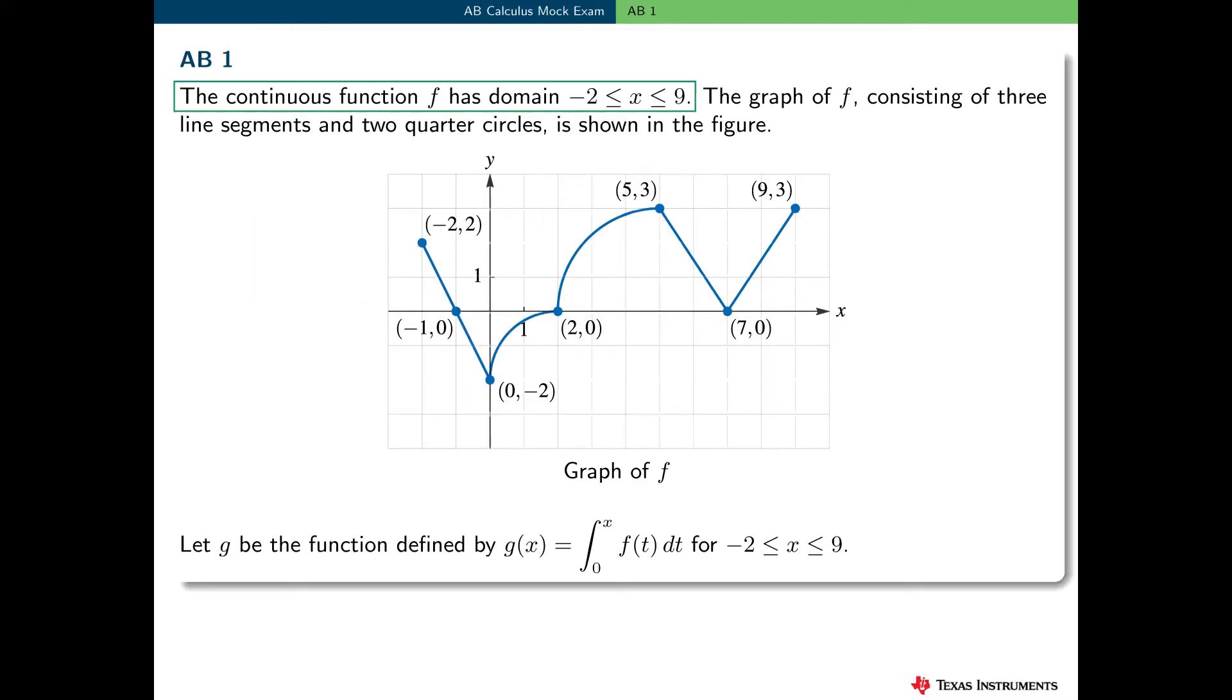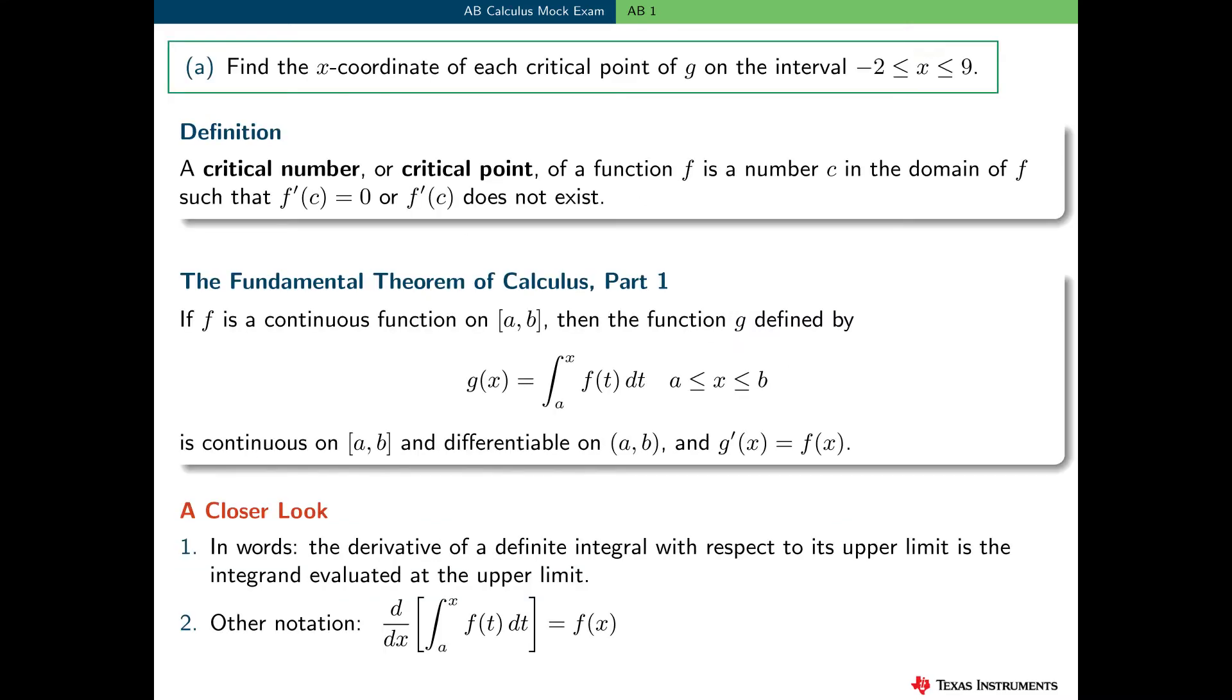Form AB1 involves a continuous function f, with domain minus 2, less than or equal to x, less than or equal to 9. The graph of f is given, and it consists of three line segments and two quarter circles. And a new function g is defined as g of x is the definite integral from 0 to x of f of t dt for x between minus 2 and 9. Part A asks the student to find the x-coordinate of each critical point of g on the interval minus 2 to 9.